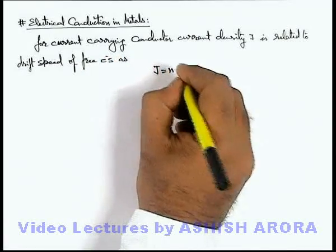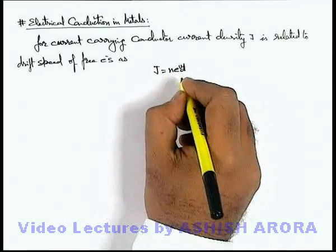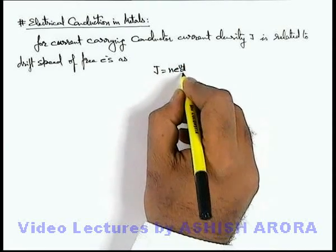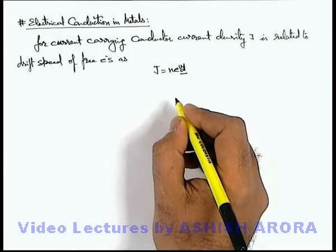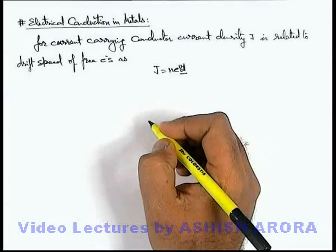J is equal to nev_d, which we already discussed. In this situation, v_d is the drift speed of electrons, n is the free electron density, and e is the electronic charge.